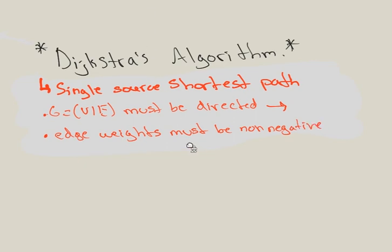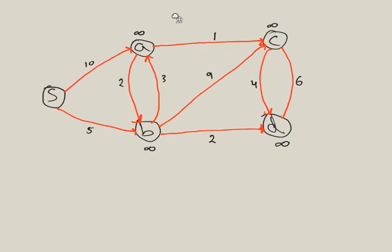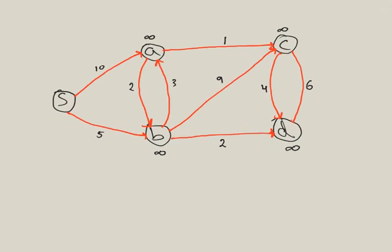I already have a graph drawn, so let's work through an example here. Let's switch back to the pen. Assuming this is the starting point S.